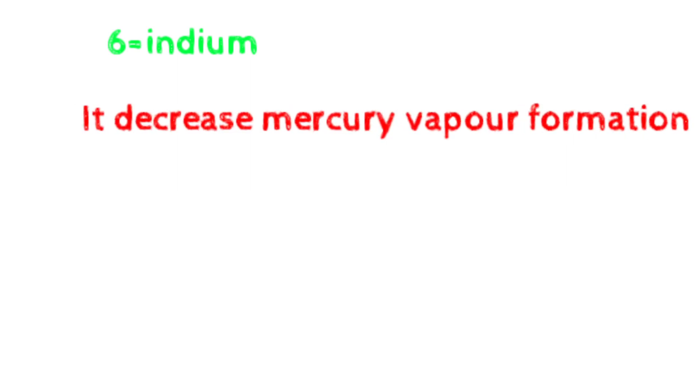Now come to copper. Same like silver, it increases strength. It increases the setting expansion to counteract the initial contraction. Third, it changes gamma 2 phase into eta and gamma 1 phase in high copper content alloy, because gamma 2 is a weak phase.